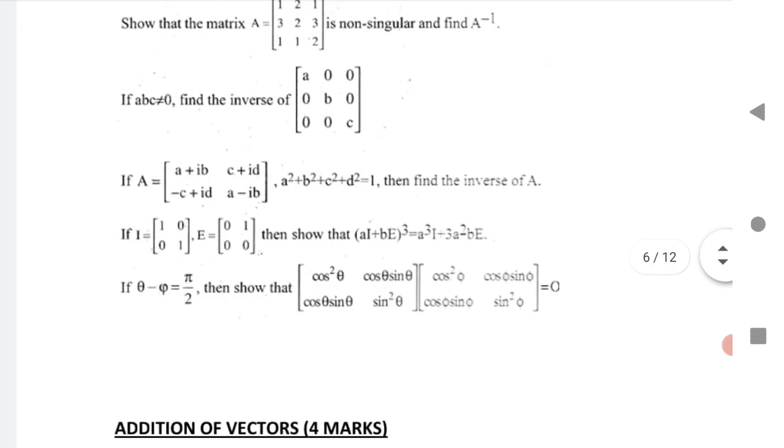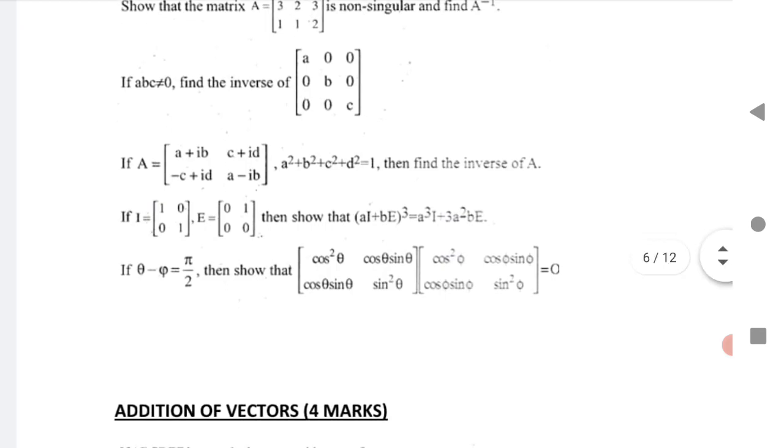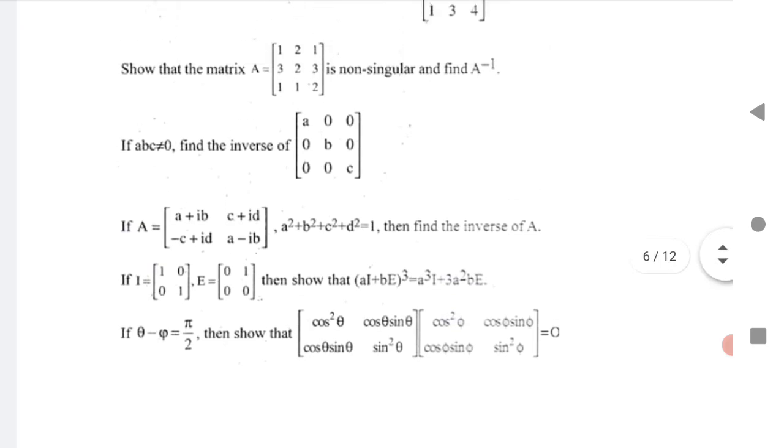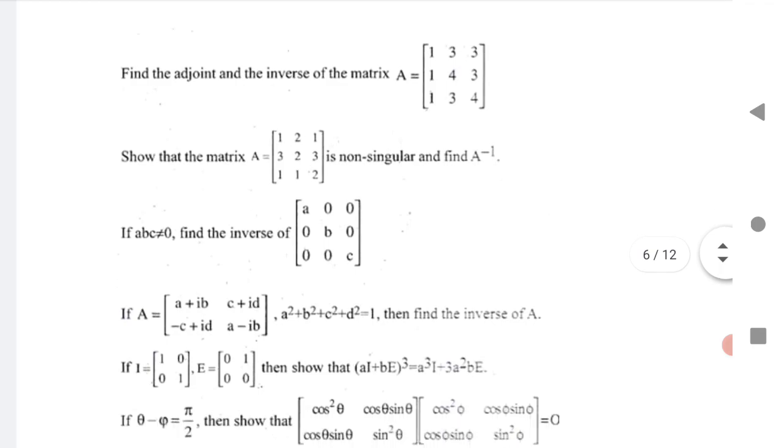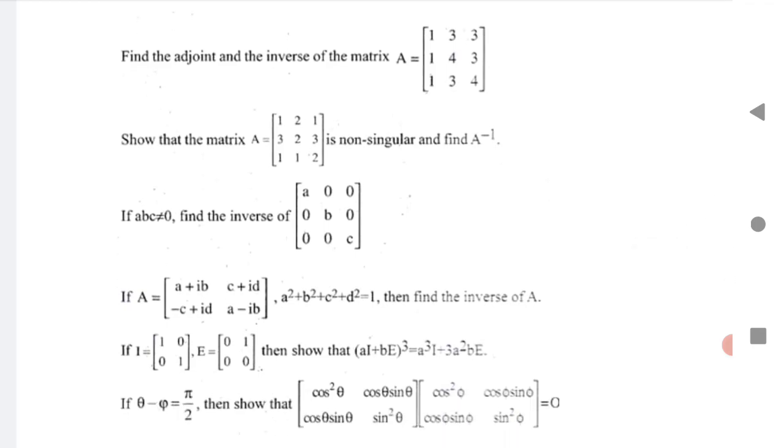This is a very important question. Next is I is given, you need to show that LHS equals to RHS. Next one, if theta minus pi equals to pi by 2, then show that these two matrices are equal. Very important questions. I request students practice inverse method for two rows and two columns for this matrices chapter for four marks.